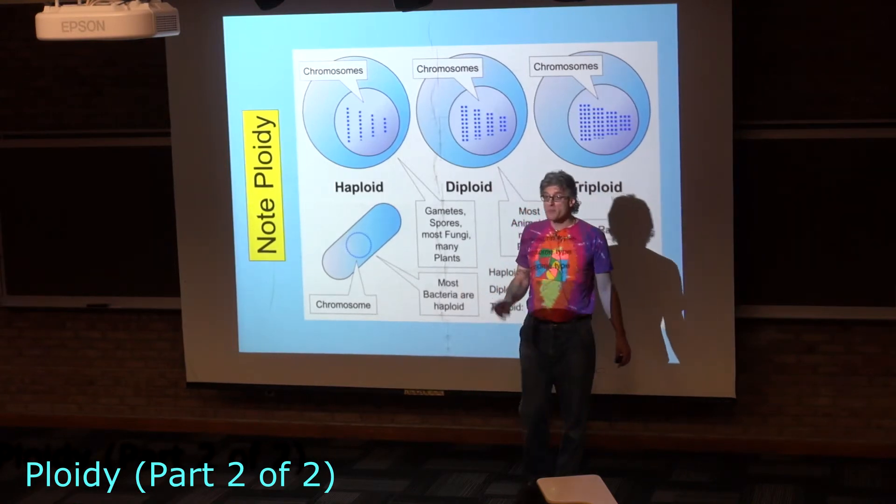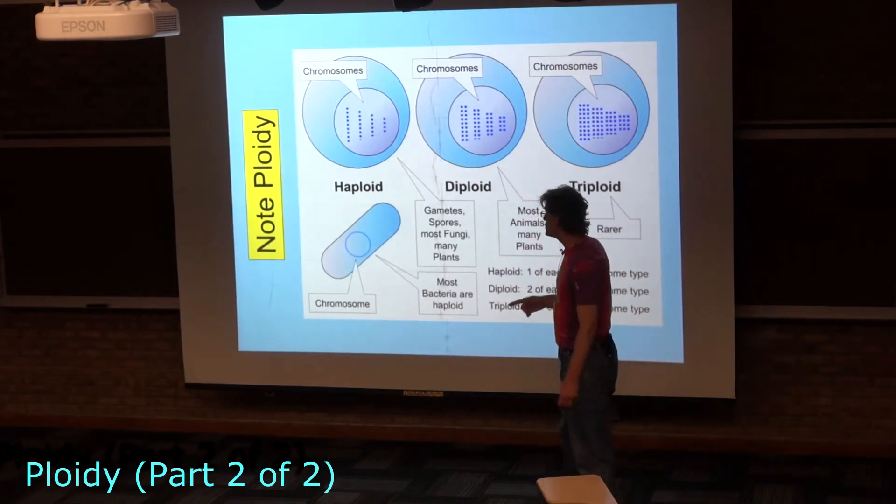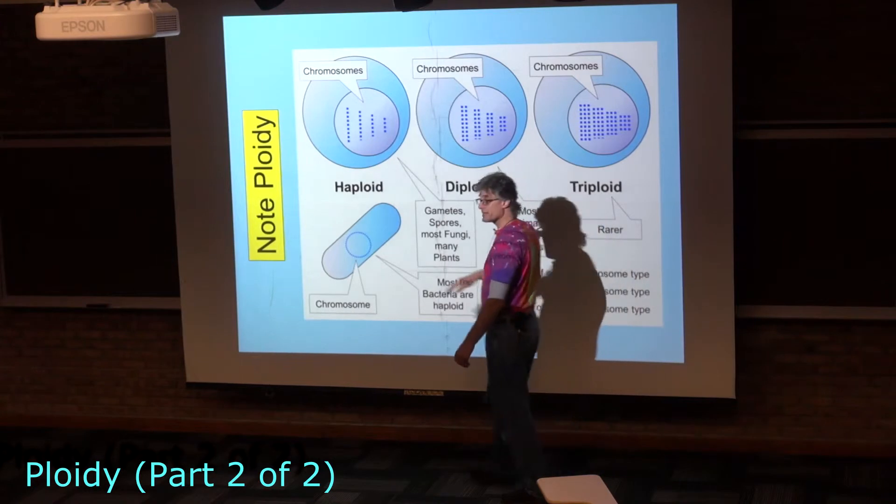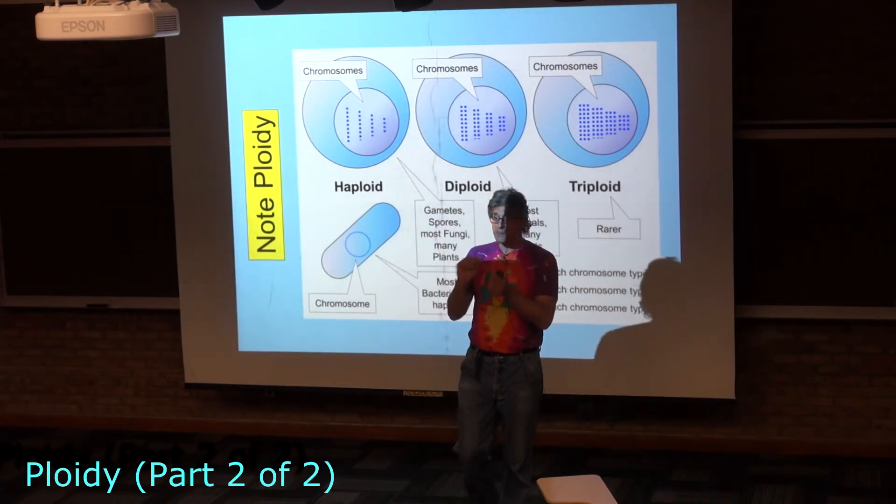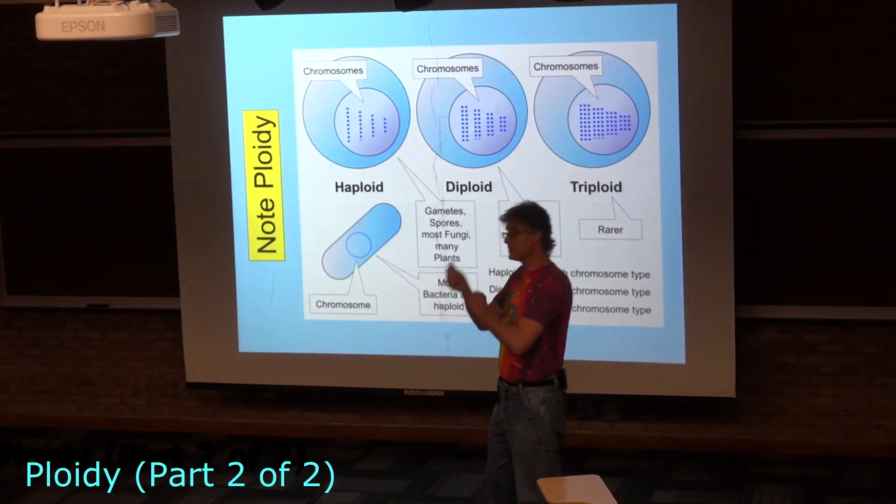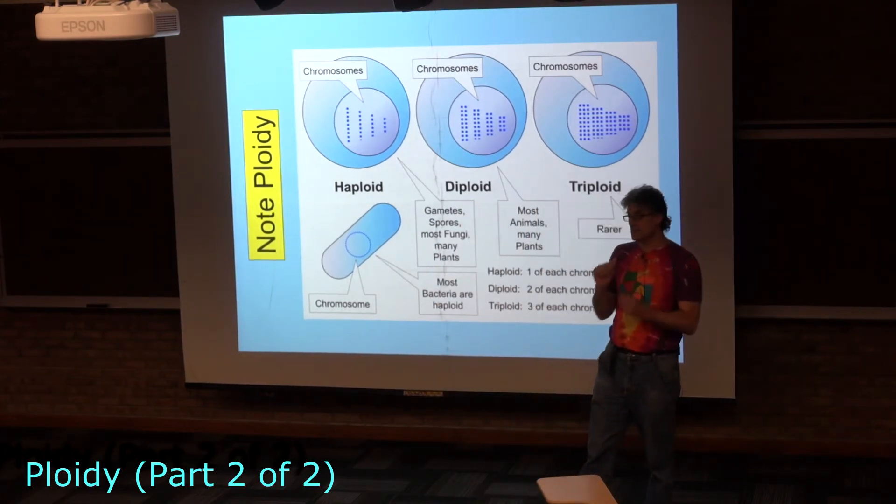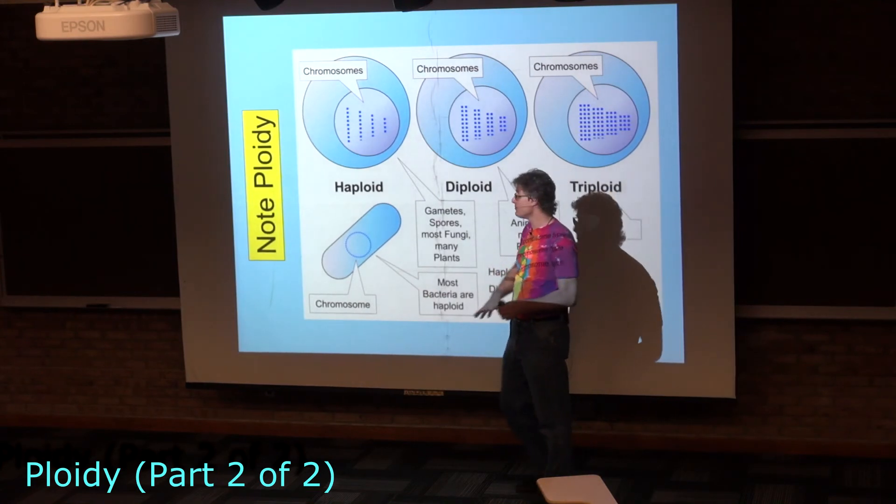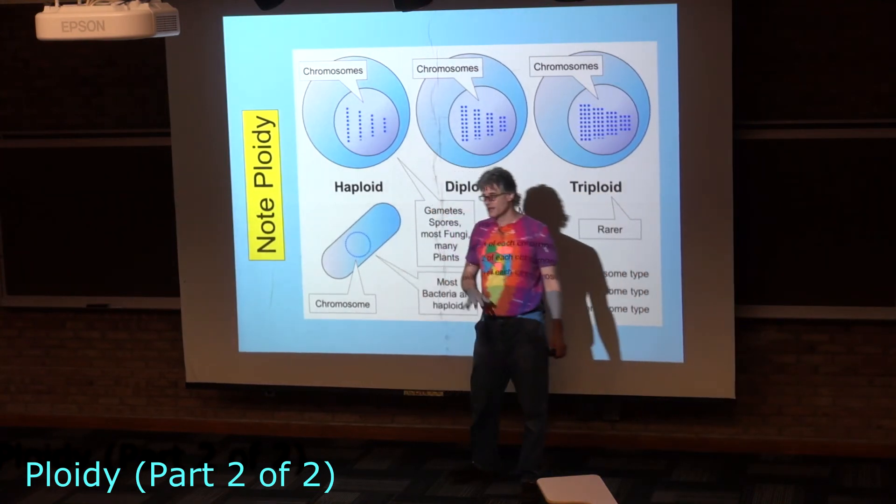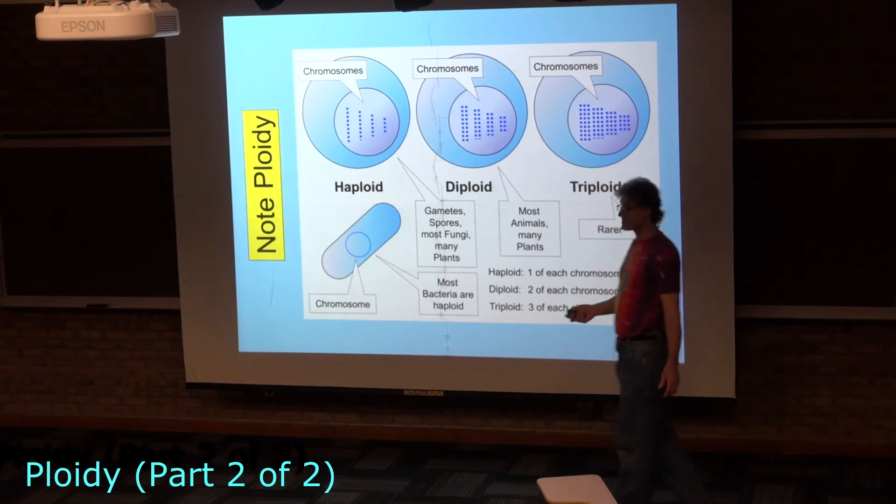Bacteria, most bacteria are haploid. This hugely simplifies the genetics of bacteria. It means that you are not going to have two copies, two different copies of a gene that could be different alleles. So the whole business of dominant recessive is much less relevant to bacteria than it is to plants or animals.